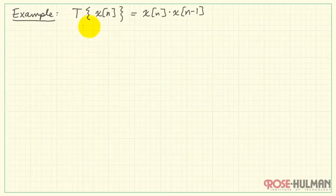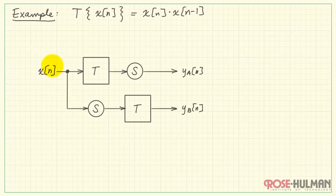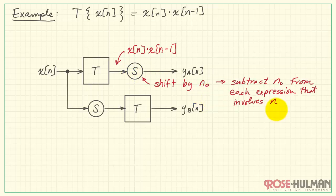Let's see how to apply this with a couple examples. Here I have a system that operates on X by taking the current X value and multiplying it by the previous X value. Let's try it on the post-shift version first. X passes through the system to produce X of N times X of N minus 1, and then we shift that by an amount N-naught. Now we need to subtract N-naught from every expression that involves N. Take X of N minus 1 and subtract N-naught.